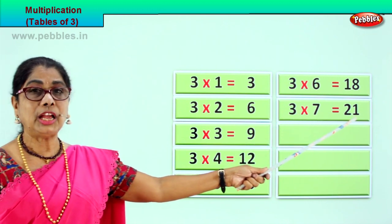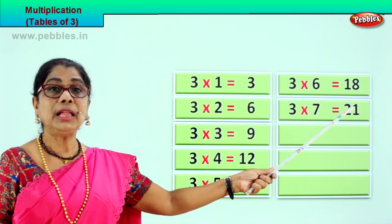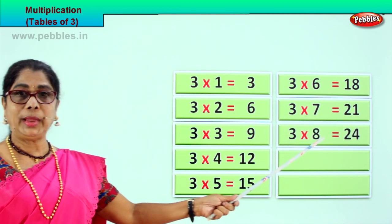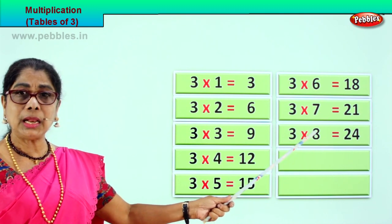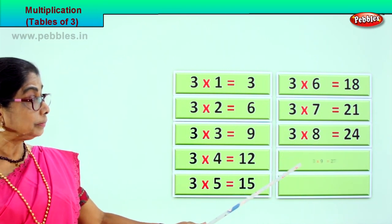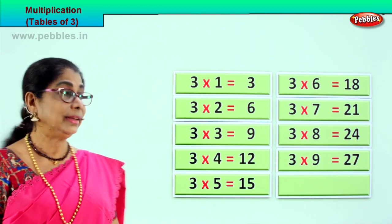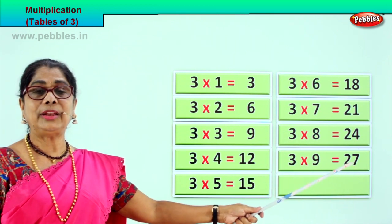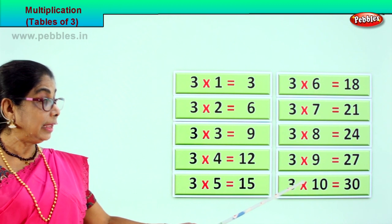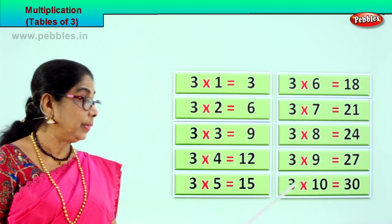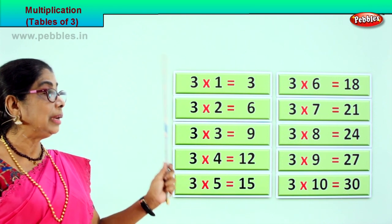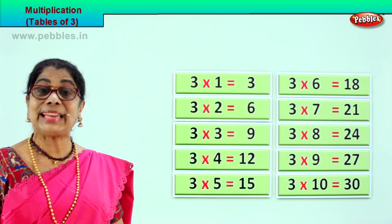Three into seven is twenty-one. Three sevens are twenty-one. What is three sevens are? Twenty-one. Good. Three into eight is twenty-four. What is three eights are? Twenty-four. Good. Three into nine is equal to twenty-seven. Three nines are twenty-seven. What is three nines are? Twenty-seven. Good. Next — three into ten is equal to thirty. Three tens are thirty. What is three tens are? Thirty. You have to look and repeat this every day to remember the tables of three better.